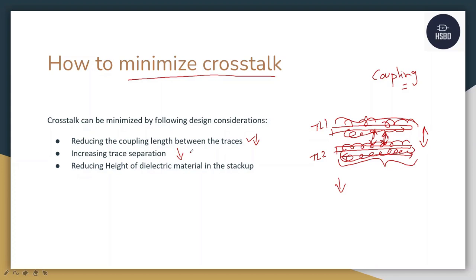Another method is reducing the height of the dielectric material in the stack up. In a typical stack up, there will be a metal layer, then a dielectric layer, then a metal layer, then a dielectric layer, and so on. In order to reduce crosstalk, you need to reduce the dielectric height. If you need more clarification about any of these options, comment down below and we will try to reply.